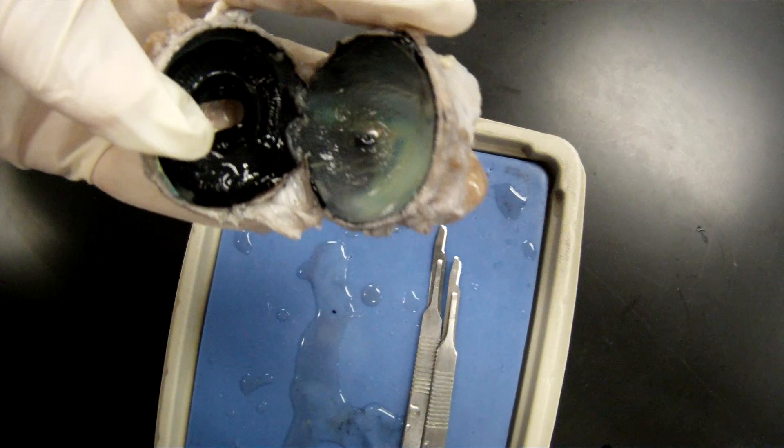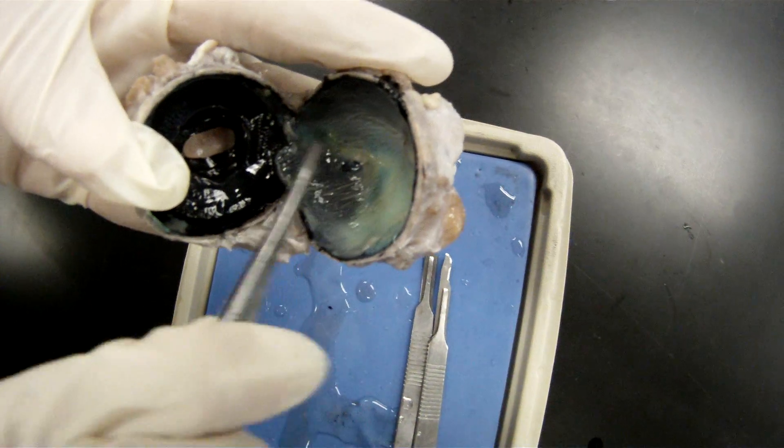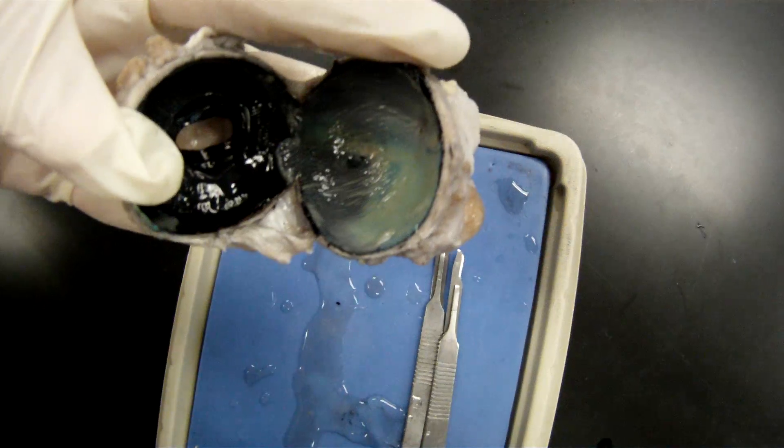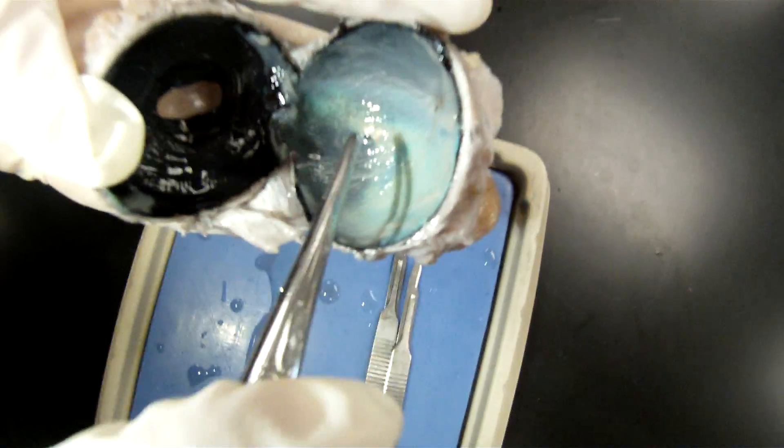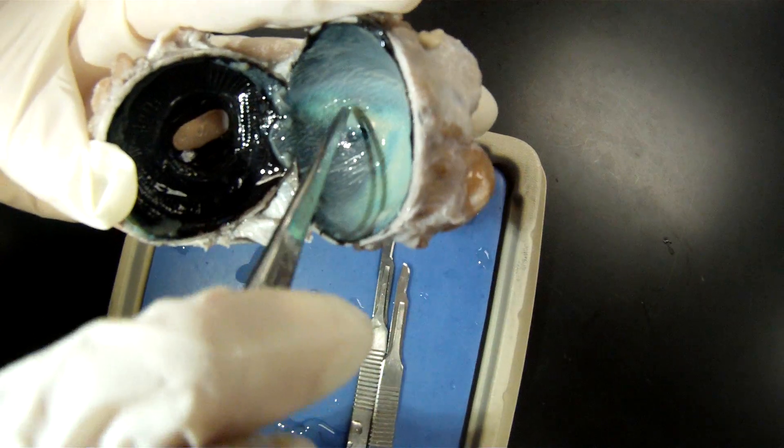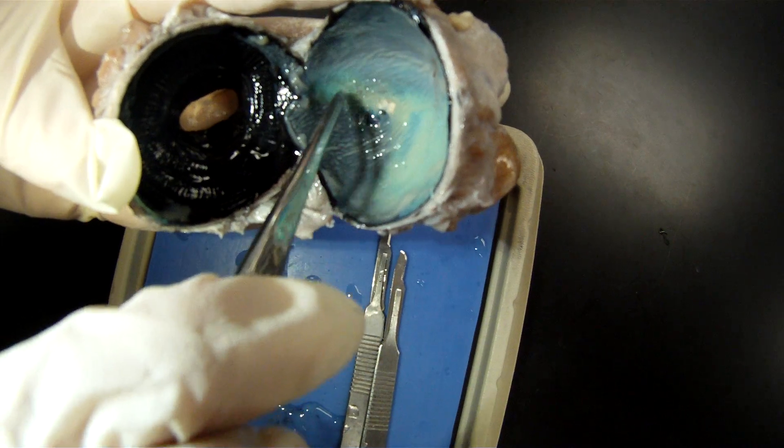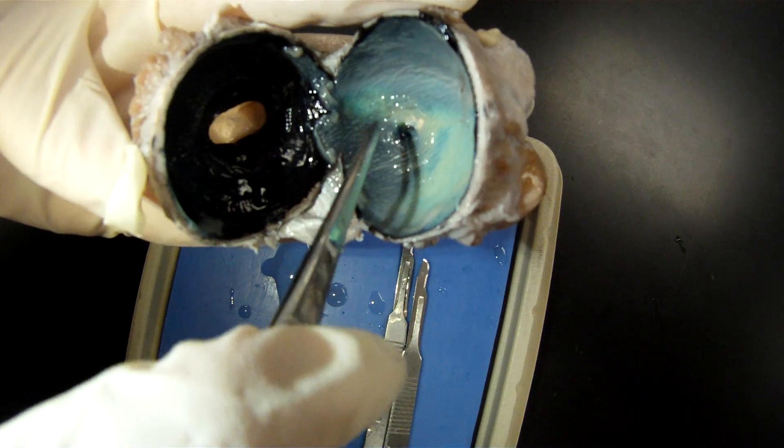When you turn on the light, that actually helps you see that better: the fovea centralis and around it, the macula lutea.